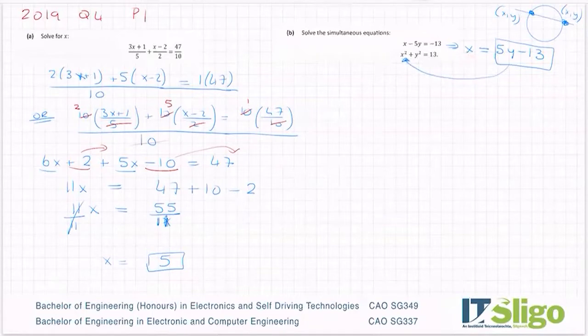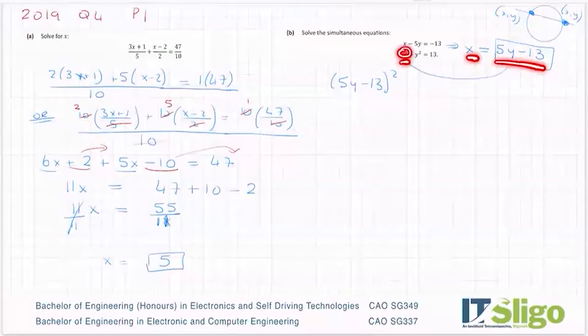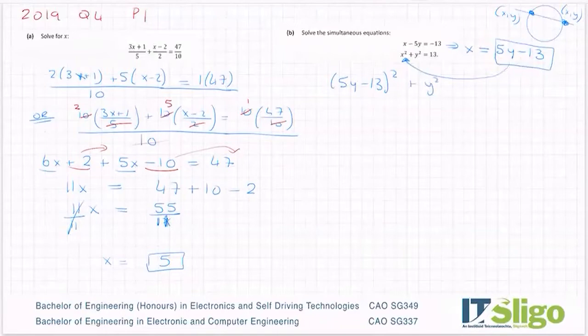So that second equation then becomes (5y - 13) squared. So I'm subbing that in in place of x, and there's a square there. That's why the square is here. And of course, I leave the +y² = 13.